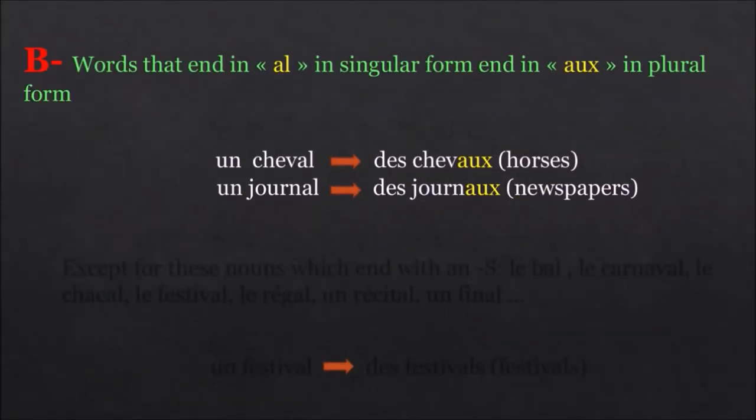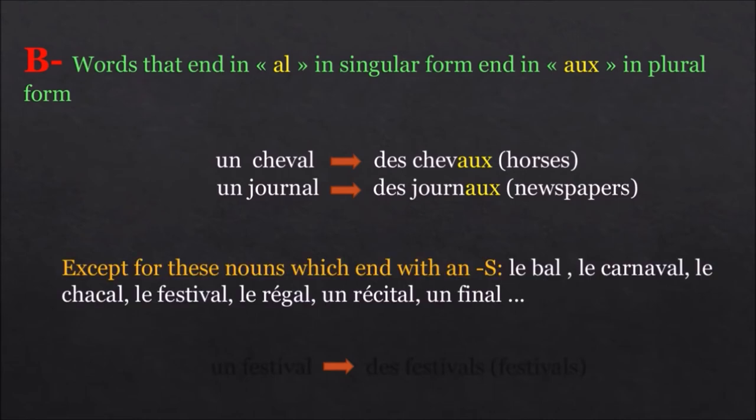Words that end in A-L in singular form end in A-U-X in plural form. For example, un cheval, des chevaux. Un journal, des journaux. Except for these nouns which end with an S. Le bal, le carnaval, le chacal, le festival, le régal, un récital, un final. For example, un festival, des festivals.